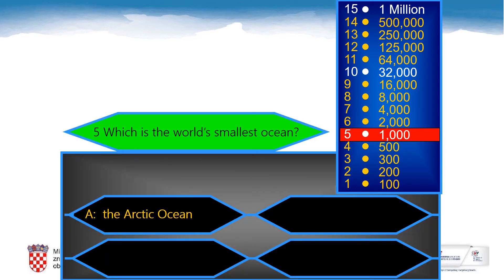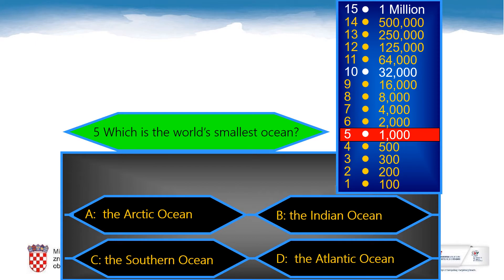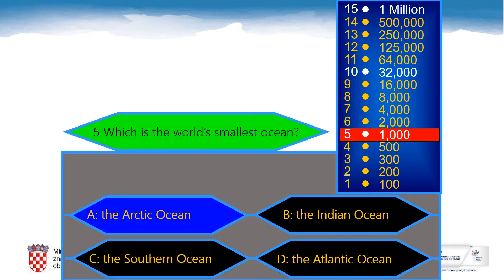The fifth question: Which is the world's smallest ocean? A: The Arctic Ocean, B: The Indian Ocean, C: The Southern Ocean, D: The Atlantic Ocean. And the correct answer is, of course, the Arctic Ocean. Great!